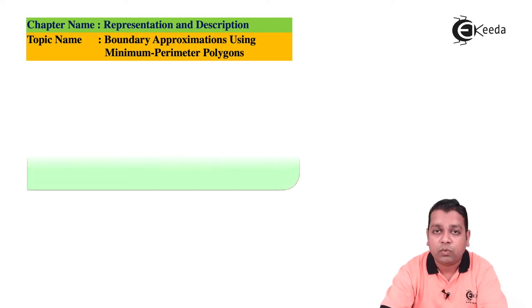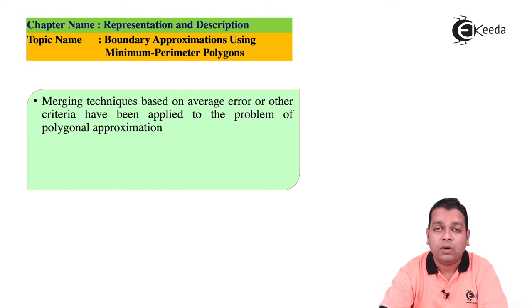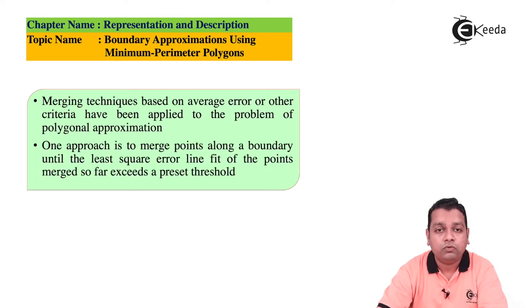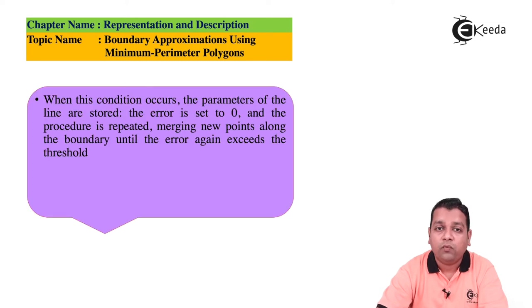After understanding boundary approximation with minimum perimeter polygons, another approach uses merging techniques. One approach is to merge points along a boundary until the least square error line fit exceeds a preset threshold. When this occurs, the line parameters are stored, the error is set to zero, and the procedure repeats.